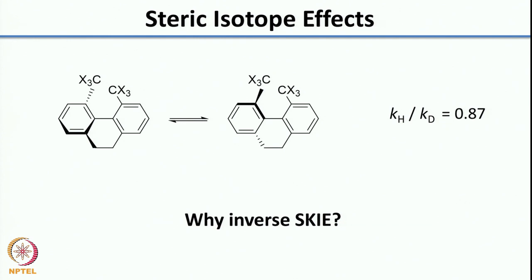When you think of isotope effects, I had left you with a problem where rotation around a single bond is restricted because you have a ring connecting the two aromatic rings. Usually when you have two aromatic rings, they can rotate along the single bond quite easily and can easily racemize. But here the rotation is restricted.